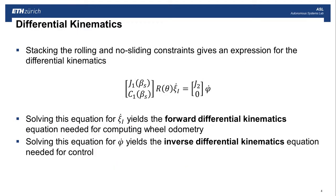Now, stacking the rolling and no sliding constraints gives us an expression for the differential kinematics. So you can see that on one side, you have all the stacked equations. This is rotating the robot's velocity expressed in the inertial frame into the robot frame. And on the other side, you have the wheel speeds. Now, if you solve this equation for xi dot i, that yields the forward differential kinematics, which you need for computing wheel odometry. And then if you solve this equation for phi i, that yields the inverse differential kinematics equation that you need for control.